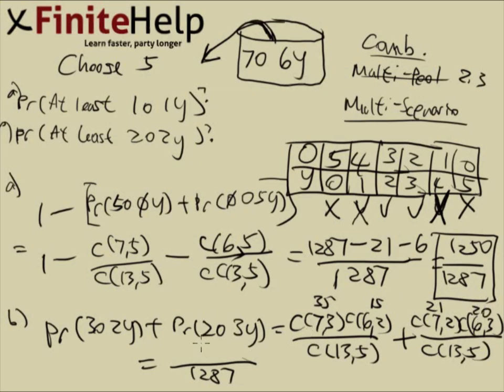So 35 times 15 is going to be 525 plus the 21 times 20. That's going to come out to 945 over 1287.